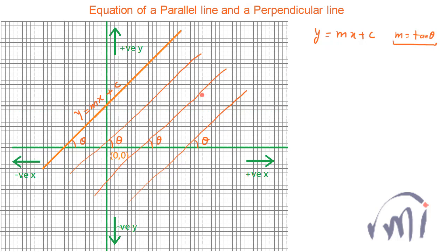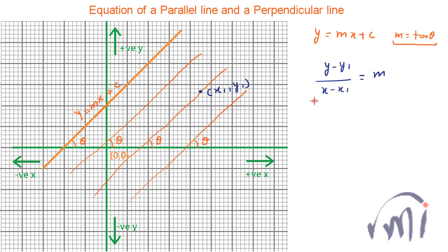If you are interested in any particular line which passes through a given point (x1, y1), then the equation of this particular line will be: (y − y1) / (x − x1) = m. So m is the slope of the line, and all the parallel lines will have the same slope. This is the equation of a line passing through a particular point (x1, y1) with slope m.